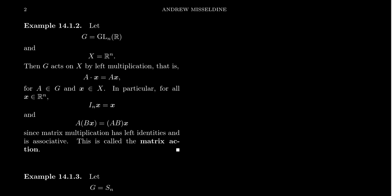Does it satisfy the axioms? The first axiom is the identity axiom: if you multiply by the identity matrix, you get back the vector x, so the identity action is trivial. For compatibility, if I act by G and then by A, that's the same as multiplying by the matrix A times B. So the compatibility axiom for the action follows immediately from the associativity of matrix multiplication. And so matrices act upon vectors — this is called the matrix action.